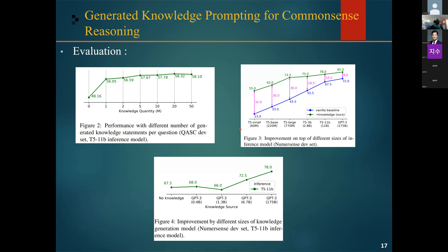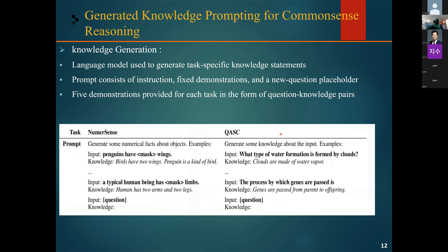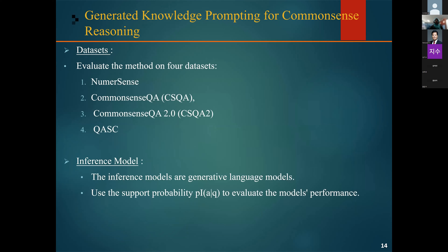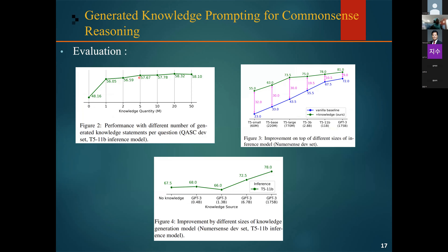They analyzed the impact of the number of generated knowledge statements used, examining how performance changes as this number increases. As we increase the quantity of knowledge statements, performance improves, but it saturates at around 20, and then begins to decline again when more knowledge statements are introduced — which may be due to noisier generated knowledge.